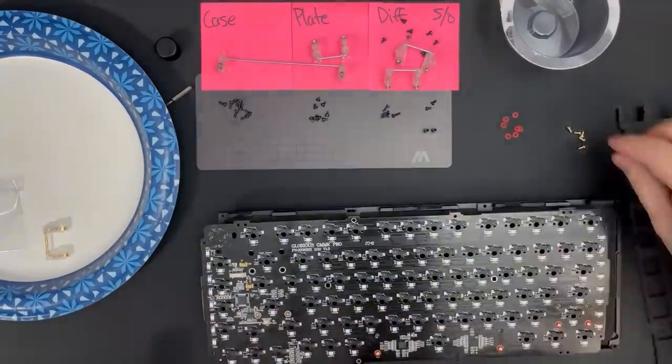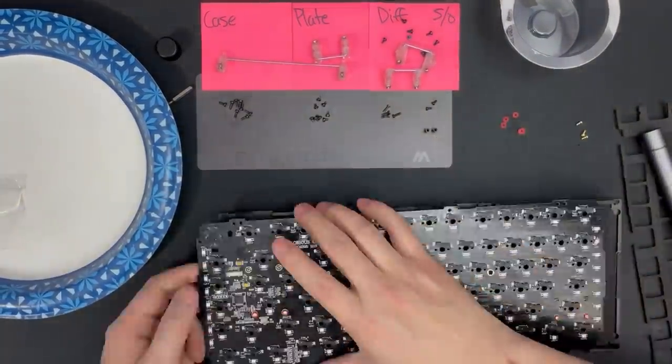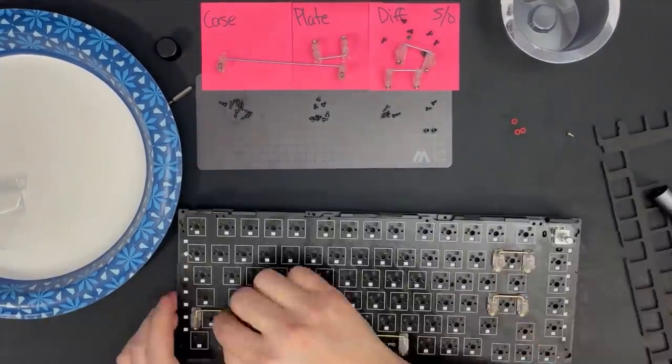At this point, I also put on some keycaps to test the stabilizers and make sure they're not rattling. You definitely want to do this before reassembling everything to save yourself some headache if the stabs need additional tuning.